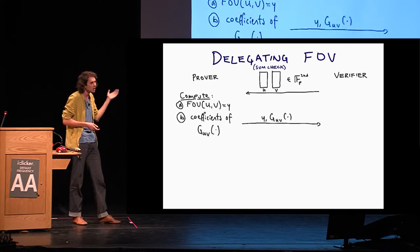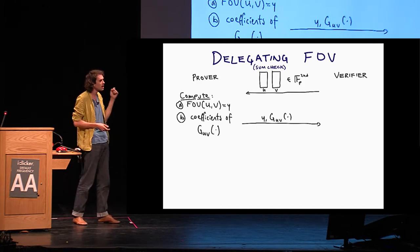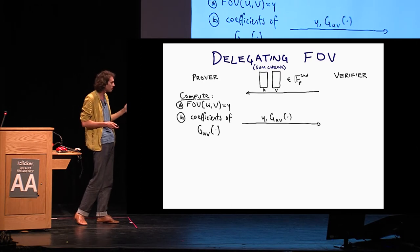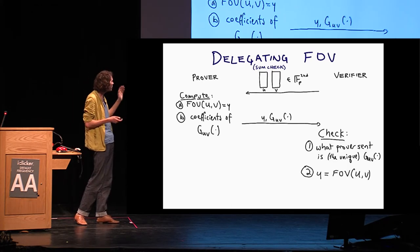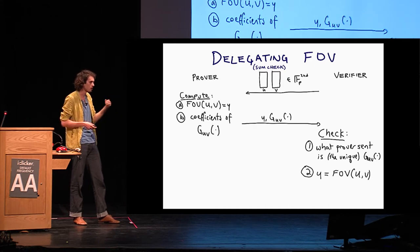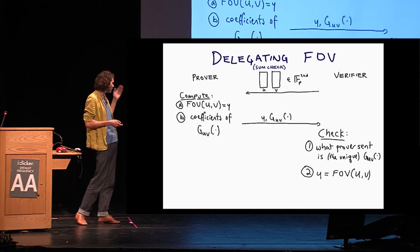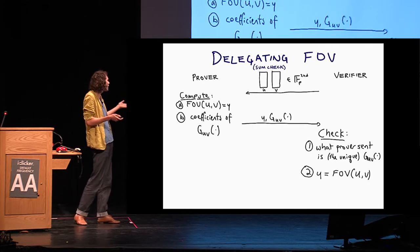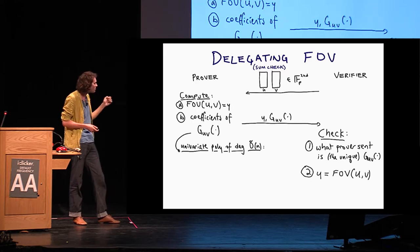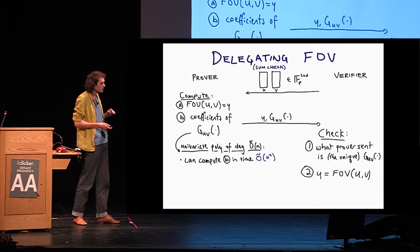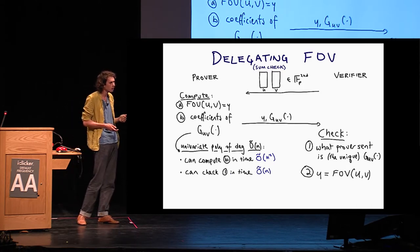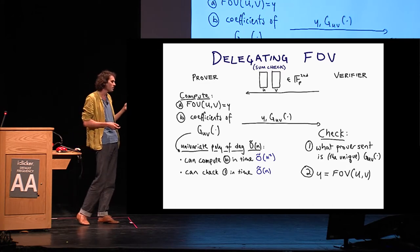The prover is going to compute FOV of Y, and he's going to compute the coefficients of this uniquely defined univariate polynomial G sub UV. It's defined by U and V. And he's going to send this back to the prover. I'm not going to tell you exactly what GUV is, but fine. So what is the verifier going to do now? He's going to check that what the prover sent is in fact this uniquely defined GUV, and he's going to check that Y equals FOV of UV. Why this sounds like the verifier should do a lot of work. But the key thing is this GUV is very helpful here.